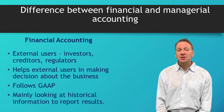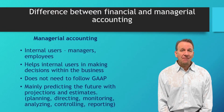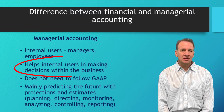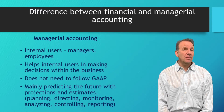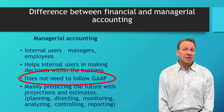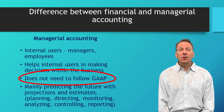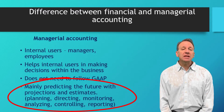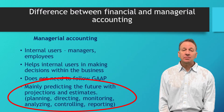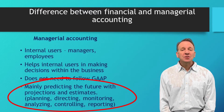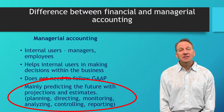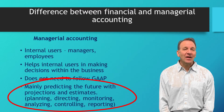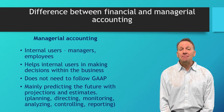Managerial accounting is not for external users — it's for internal users. It helps management make decisions by giving them information. This information does not need to follow GAAP, because it's being used internally and we're not presenting it to outsiders. It's mainly about predicting the future with projections and estimates. What managerial accounting is really about is planning, directing, monitoring, analyzing, controlling, and reporting information.